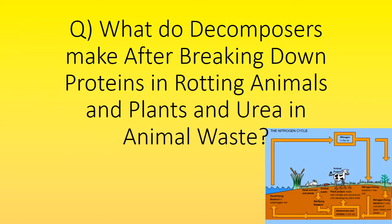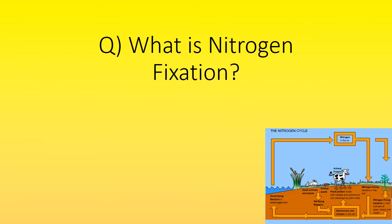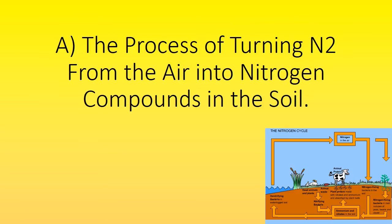What do decomposers make after breaking down proteins in rotting animals and plants and urea in animal waste? Ammonia. What is nitrogen fixation? The process of turning nitrogen from the air into nitrogen compounds in the soil.